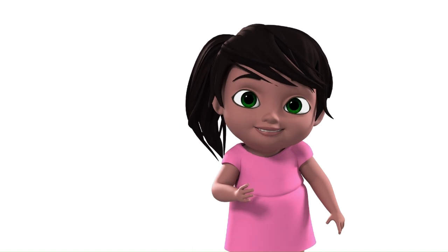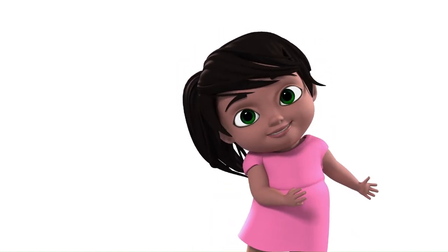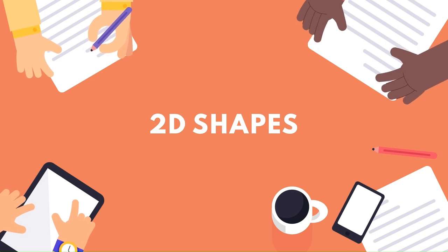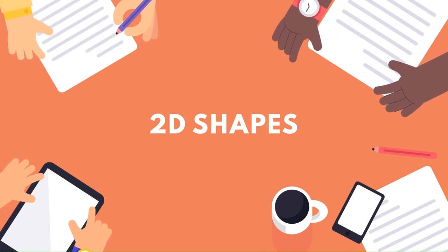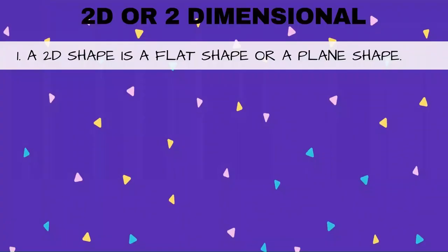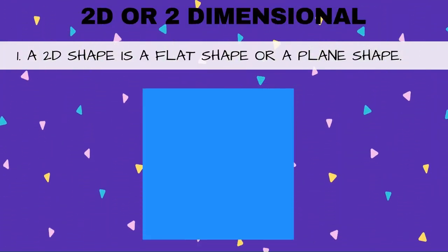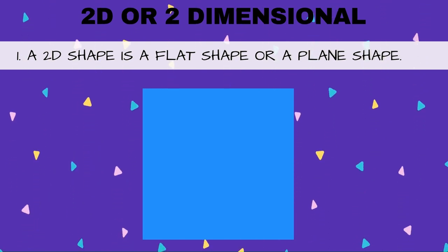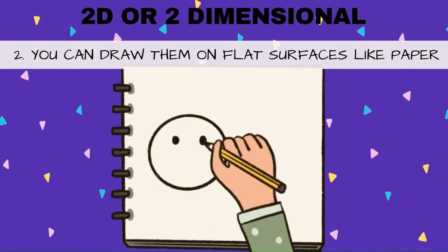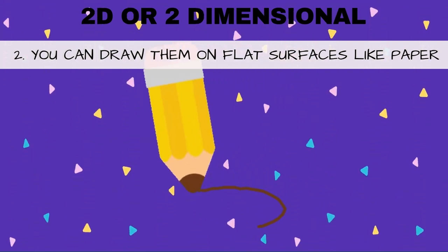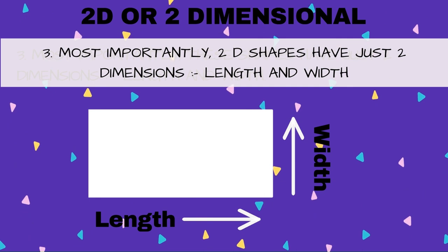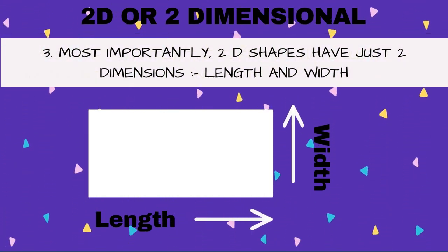Let's have a look at a few characteristics of 2D shapes. A 2D shape is a flat shape or a plain shape — you can draw them on flat surfaces like paper. 2D shapes have just two dimensions: length and width.